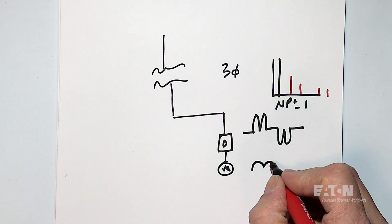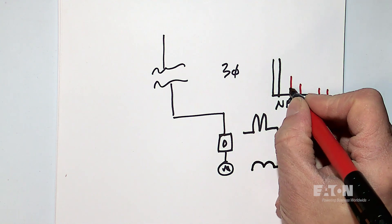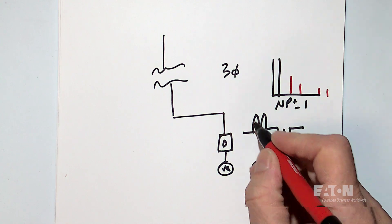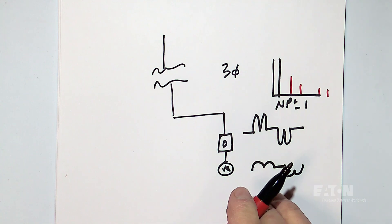So if I have a flatter looking wave shape, I'll have less of this current. If I have a spikier or peakier one, it'll have more of that current. But that's pretty typical for three phase.